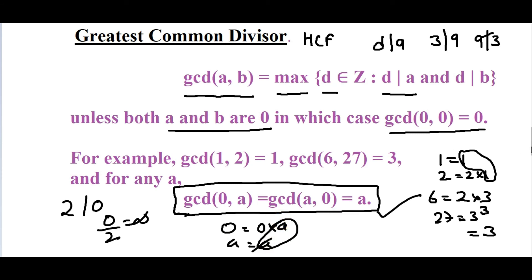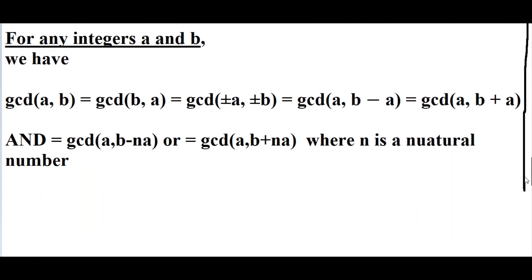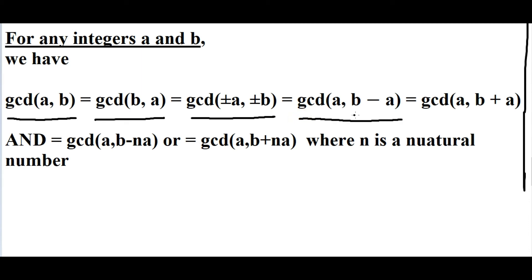For any integers a and b, here are very important GCD theorems — please note them down as they are important from the exam point of view. First: gcd(a, b) = gcd(b, a). Second: gcd(±a, b) = gcd(a, b) — changing the sign doesn't matter. Third: gcd(a, b − a) = gcd(a, b + a) — whether you add or subtract a, the GCD remains the same.